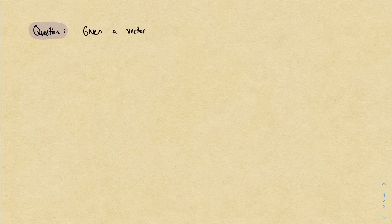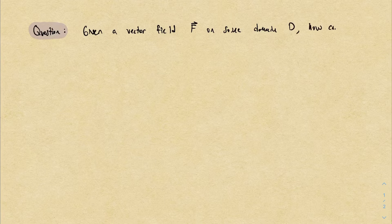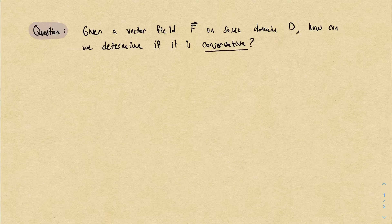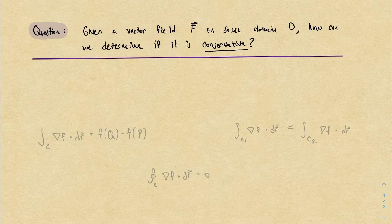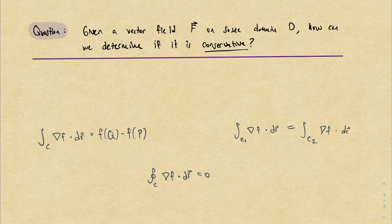Here's the question of the day. If we're given a vector field F on some domain D, how can we determine if it's conservative? Given what we've learned about conservative vector fields so far, this seems like a great question to ask just because they satisfy so many nice properties. In general, this is a pretty difficult question to answer.